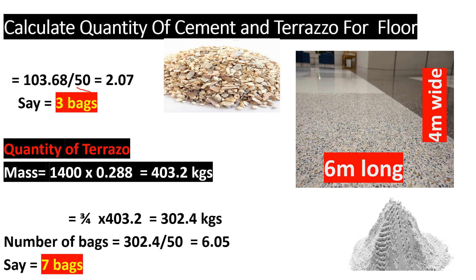For terrazzo, mass equals density times volume. The density is 1000 kg per cubic meter and the volume is 0.288 cubic meters, giving a mass of approximately 302 kg. Since the terrazzo ratio is three out of four, we take three over four times 302, giving us approximately 302.4 kg of terrazzo needed. Dividing by 50 kg per bag gives us about 6.05 bags, so we can say seven bags of terrazzo chippings.